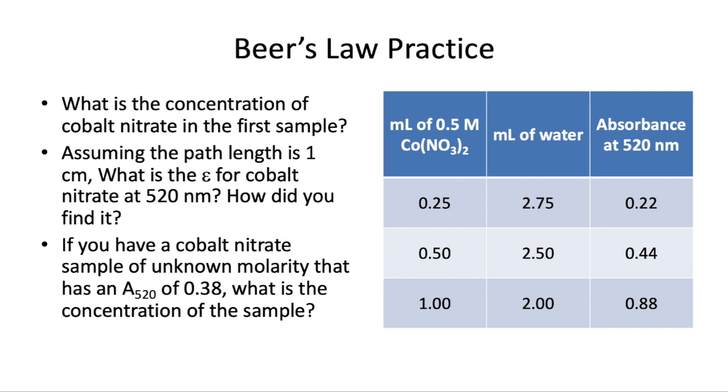Based on our first sample, we can find the concentration because we know the concentration that we started with, 0.5 molar, and how much we used. And together these add up to the overall volume of 3 milliliters. So we know now what the new concentration will be. So this concentration, 0.0417 molar, is what corresponds to an absorbance of 0.22.